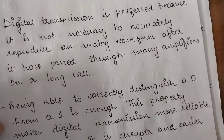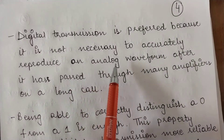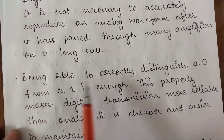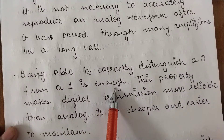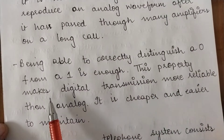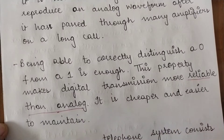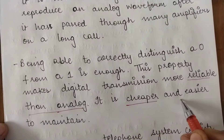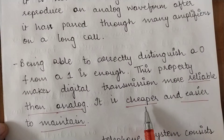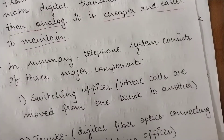Digital transmission is preferred over analog transmission because it is not necessary to accurately reproduce an analog waveform after it has passed through many amplifiers on a long call. If you can correctly distinguish a 0 from a 1 in a digital transmission, that is sufficient. This makes digital transmission more reliable than analog transmission, and furthermore, it is cheaper and easier to maintain. Because of these three features — reliability, low cost, and easier maintenance — digital signals are preferred over analog signals.